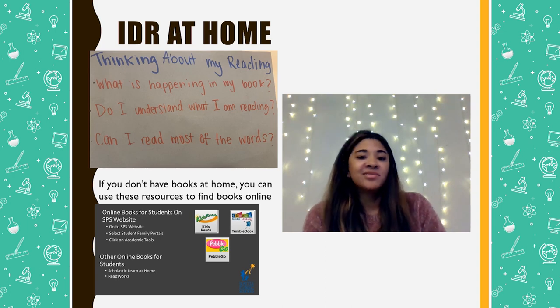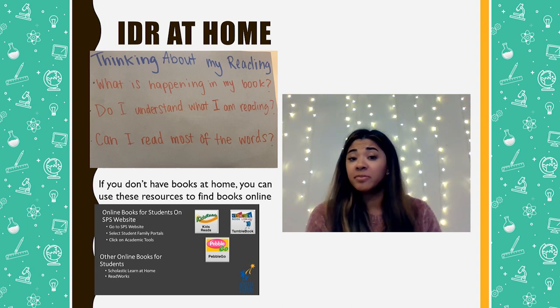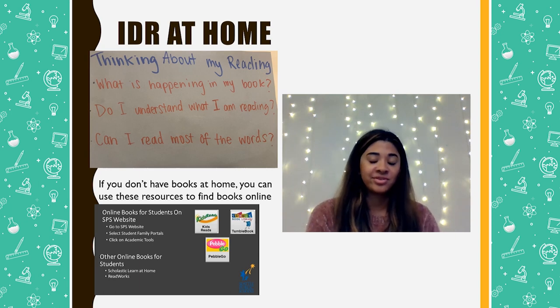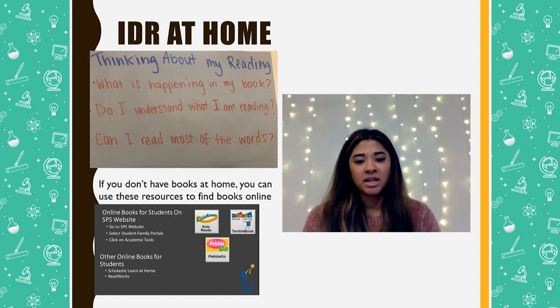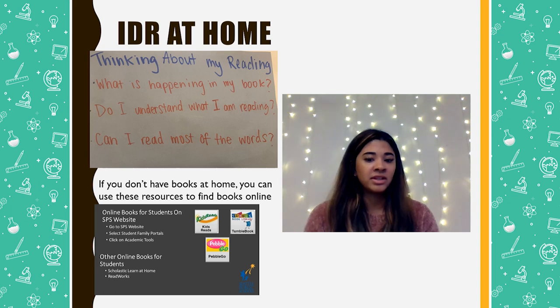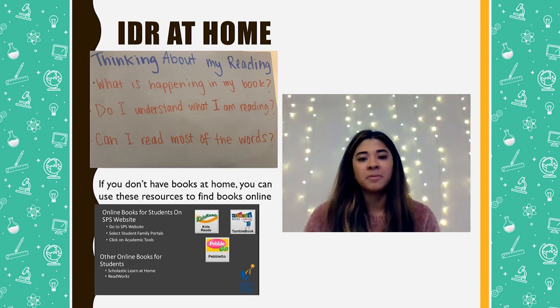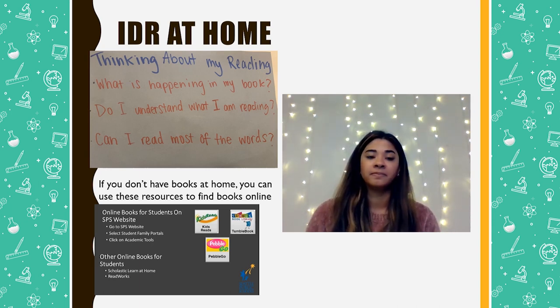Today we read an article and thought about what we learned and what was important in it. When an author writes an article or stories, there are things they really want the readers to learn and remember — these are important ideas. We'll have more chances to practice this skill in the next lesson. You can also practice when you're reading at home. For the next four weeks at home, you're going to be reading nonfiction and fiction stories. Look at the poster of thinking about your reading: what's happening in the book, do you understand what you're reading, can you read most of the words? If you can't understand or read most of the words, maybe switch to find a book that is more just right for you.